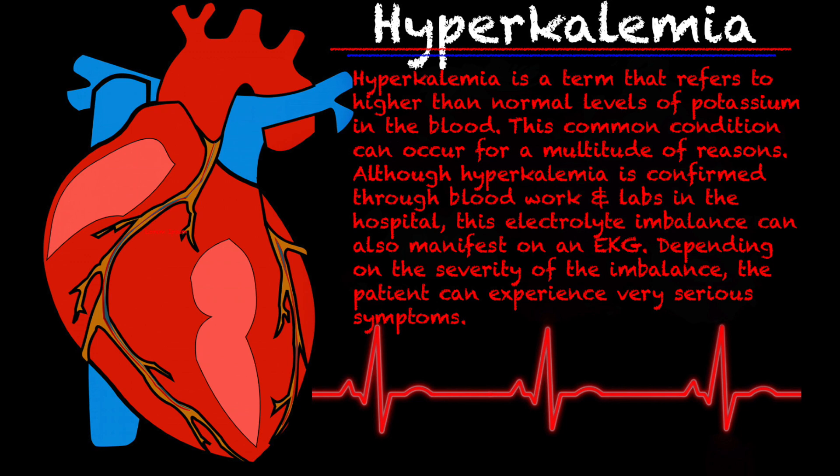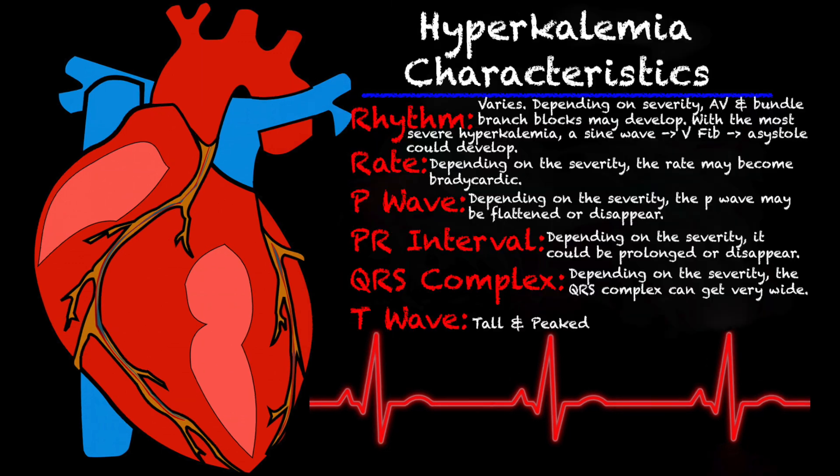Let's talk about some of the characteristics of hyperkalemia on a 12-lead. With the rhythm, it varies. Depending on the severity, AV blocks can develop, bundle branch blocks can develop, and with some of the most severe cases of hyperkalemia, a sine wave can form — I will show you an example of that in a little while. And ultimately, it can turn into V-fib and the patient can unfortunately pass away.